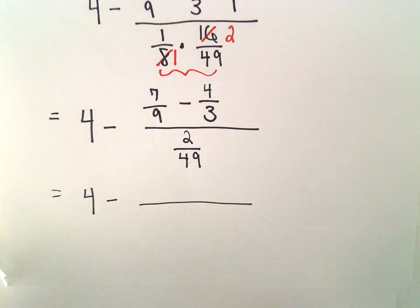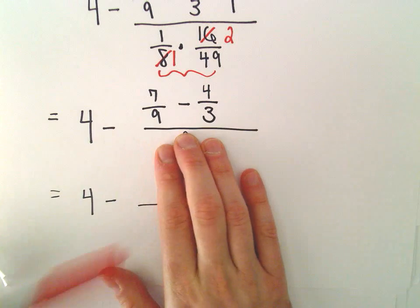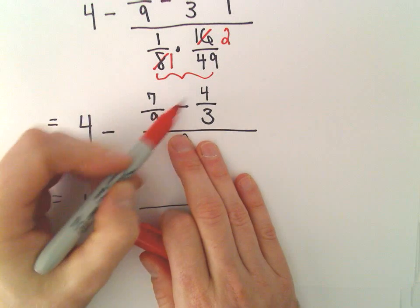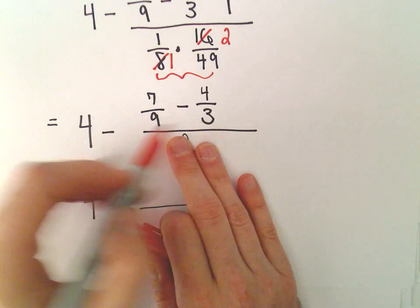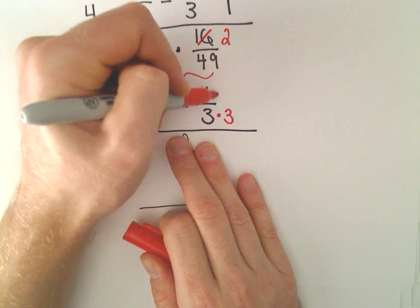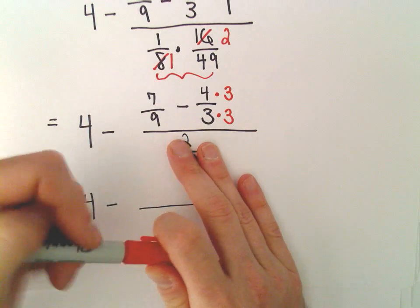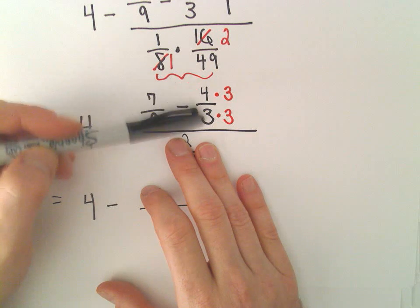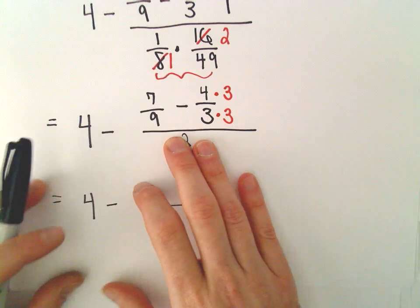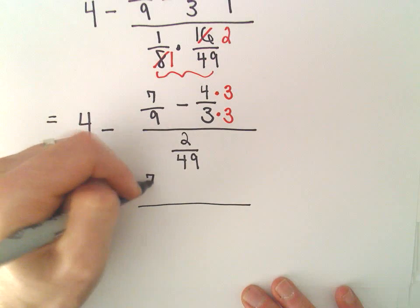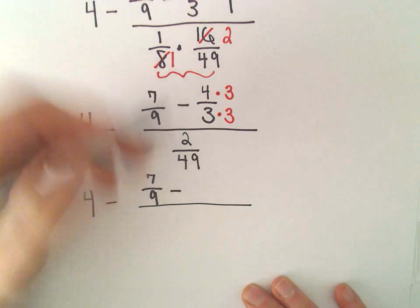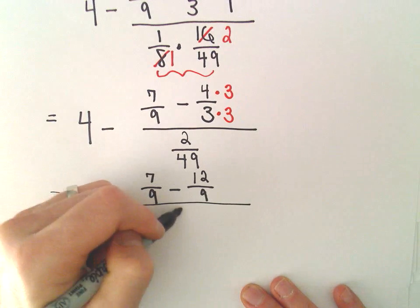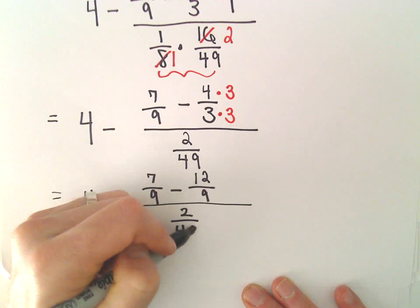So all I'm looking at is the numerator of my fraction. So I've got 7 over 9 minus 4 over 3. I could have a common denominator of 9 by multiplying my fraction that involves the 4 over 3 by 3 over 3. So we've got 7 over 9 minus, 4 times 3 would be 12 all over 9. And this is over 2 over 49.